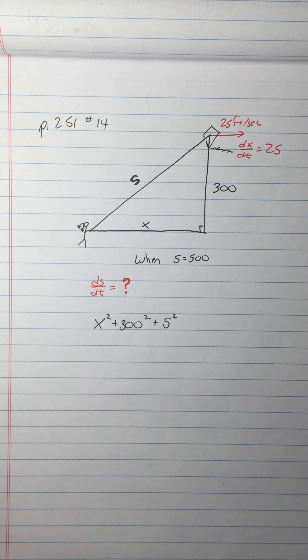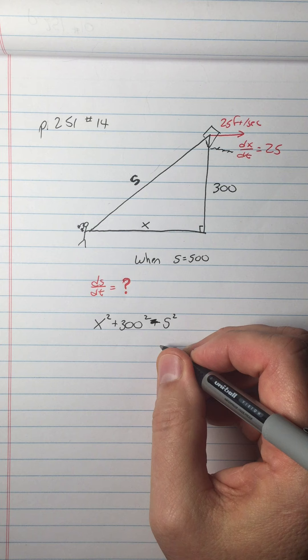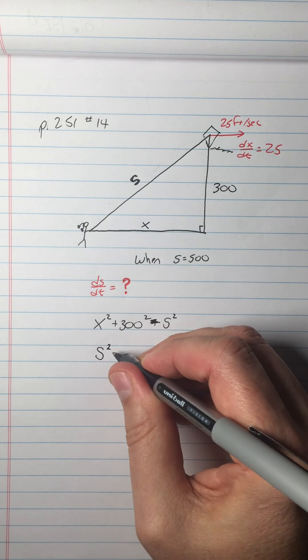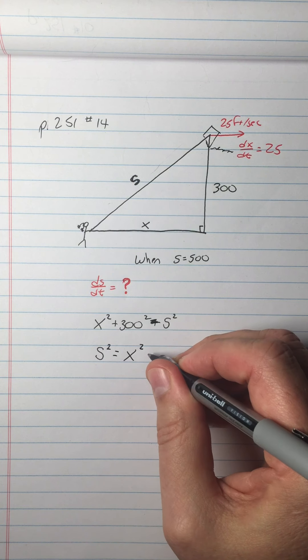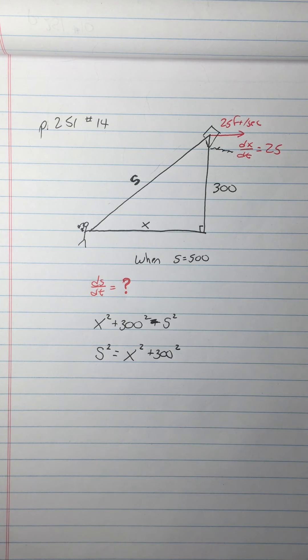They'll give you some layout. You need to spot when Pythagorean theorem is in play or 30-60-90 triangle or something like that. You've got to know all your geometry. This equals s squared. I'm going to write the s squared first. S squared equals x squared plus 300 squared.